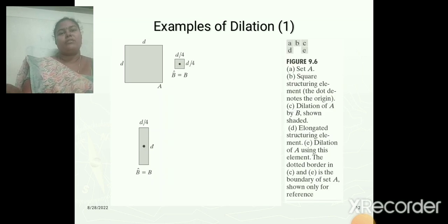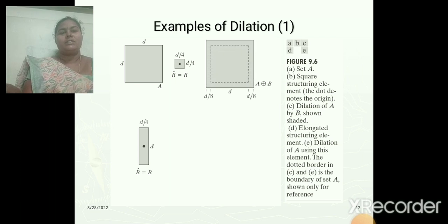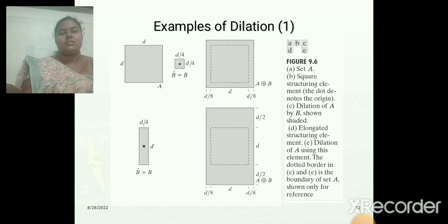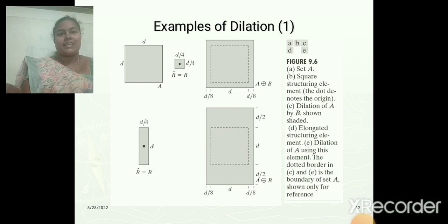This is an example for dilation operation. The first image is the given input image and the second is the structuring element. Two types of structuring elements are used here: square and rectangular. First, we get the dilation output using the square structuring element. This is the second output obtained using the rectangular structuring element. We can see that the border of the input image is expanded — it is dilated using structuring element B.